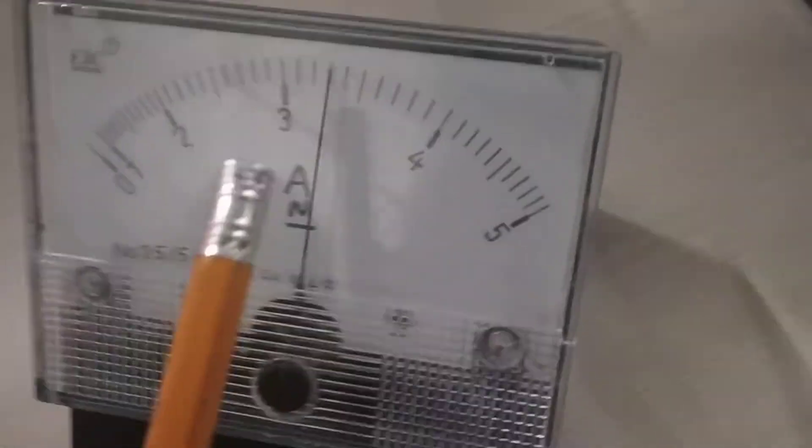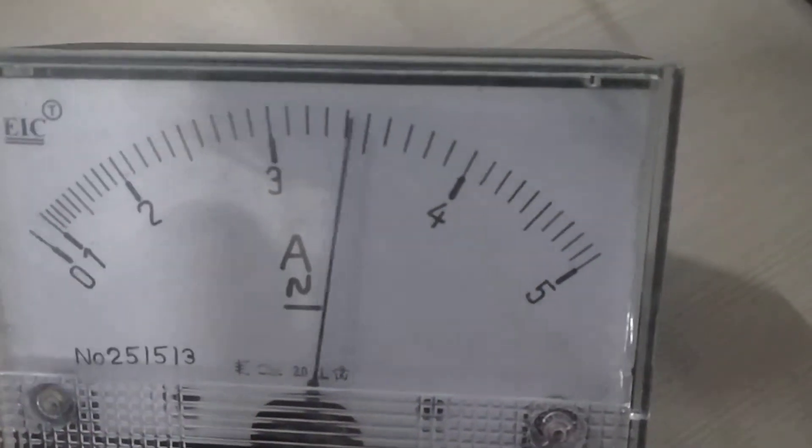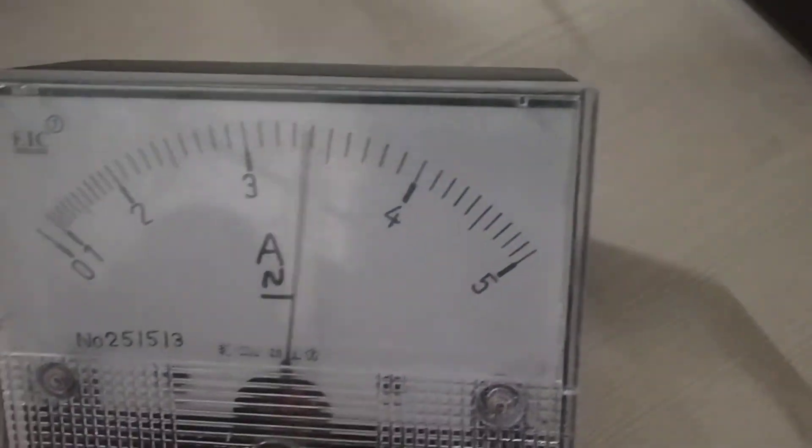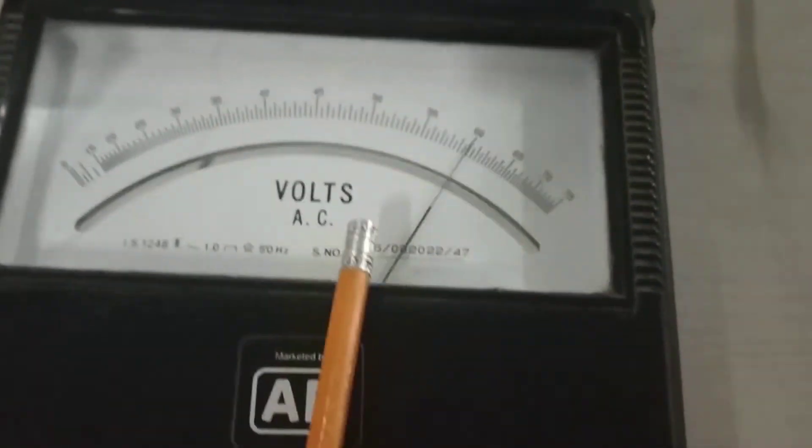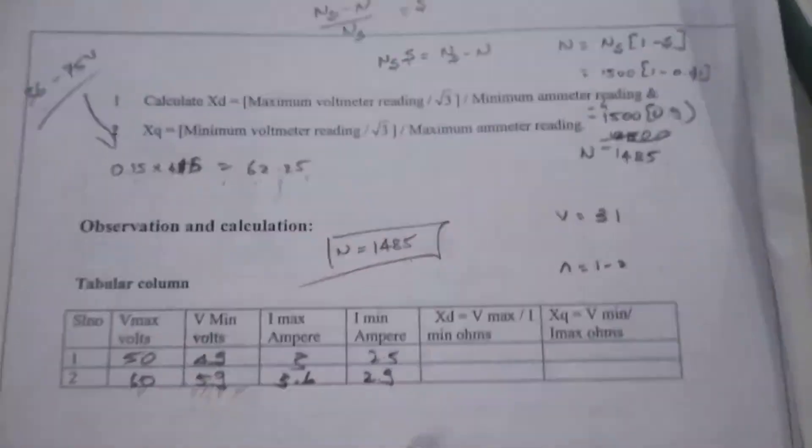Here the ammeter is deflecting. The maximum deflecting point is 3.5 and the minimum deflecting point is around 3.1. The same reading is taken here. And here the maximum deflection is 60 and the minimum deflection is 69. The same reading is taken here.